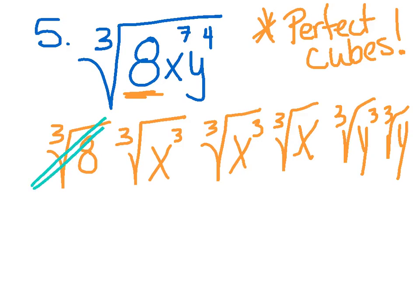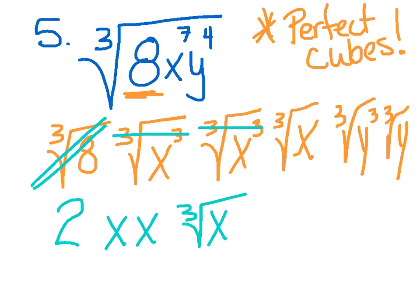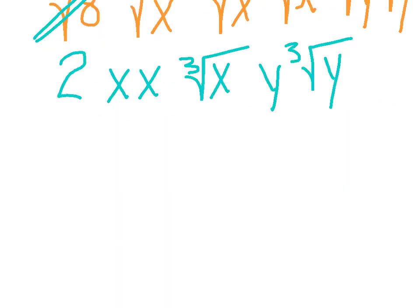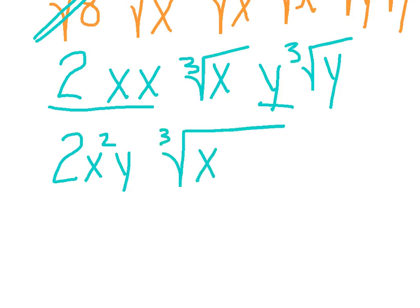As I go through: the cubed root of 8 is the number 2, because 2 times 2 times 2 is 8. The cube and the cube root cancel to make an x. They cancel again to make another x. Not going to cancel on the next one, so I rewrite it as the cubed root of x. These cancel to make just a y. And the last one won't cancel, so I leave that as the cubed root of y. Lastly, I'll put my outside terms together: I've got a 2, x and x make x squared, and a y is outside. Inside my cubed root, I'm left with an x and a y.